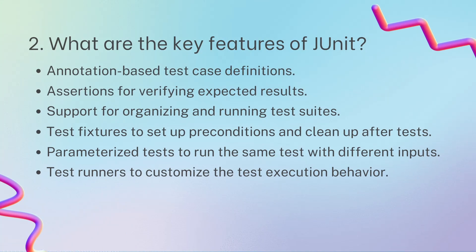Key features of JUnit include: annotation-based testing, asserting test cases, support for organizing and running test suites, test fixtures for pre-conditions and cleanup after tests. For example, if you are declaring a new variable during a test, it should be cleaned up after the test is done. You can also write parameterized tests to run the same test with different inputs, and use test runners to customize test execution behavior.